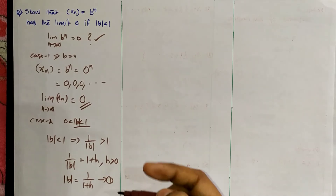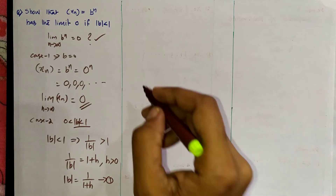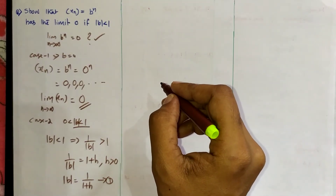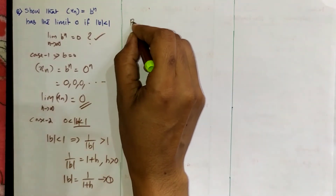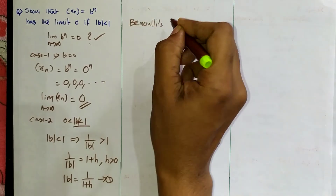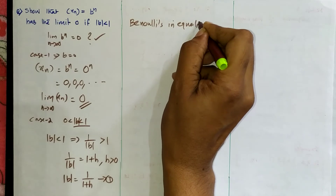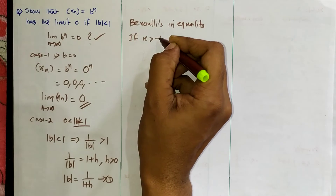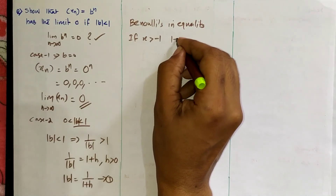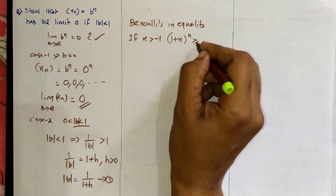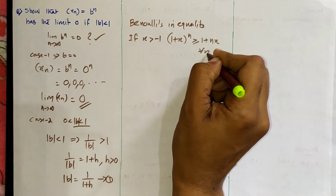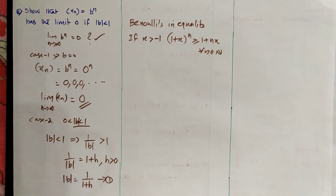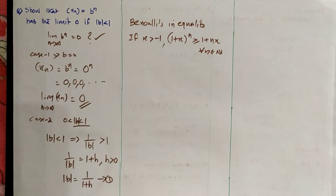We consider an inequality — Bernoulli's inequality. Bernoulli's inequality states that if x greater than minus 1, then 1 plus x all raised to n is greater than or equal to 1 plus nx, for every n in the natural numbers. This is Bernoulli's inequality, and a proof is given in chapter 2.